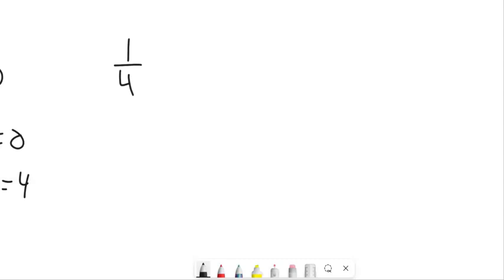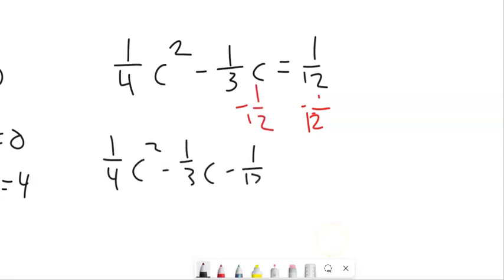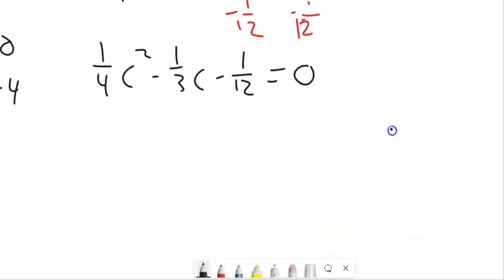One last example I want to throw at you. First thing about this is it's not in the form A variable squared plus A variable plus number equals 0. So let's subtract 1 12 from both sides. So that's kind of nice. Now, you could go from here. You could say A is 1 4th. B is negative 1 3rd. C is negative 1 12th. Man, that's going to be ugly to manipulate. Let's take advantage of that there's a 0 over here.